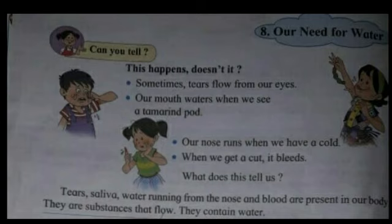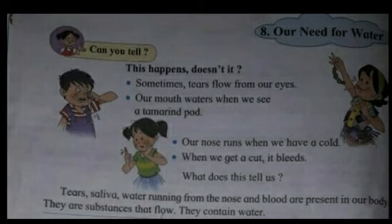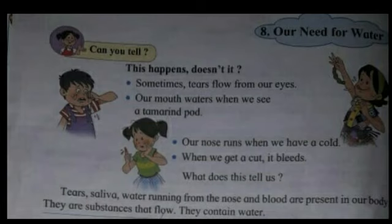So children, what does this tell us? When we get a cut, it bleeds. Suppose you are cutting an apple and your finger gets cut — at that time your finger starts bleeding. Tears, saliva, mucus running from the nose, and blood are all present in our body. These are substances that flow, and they contain water.